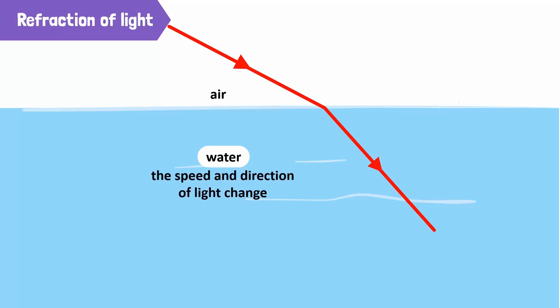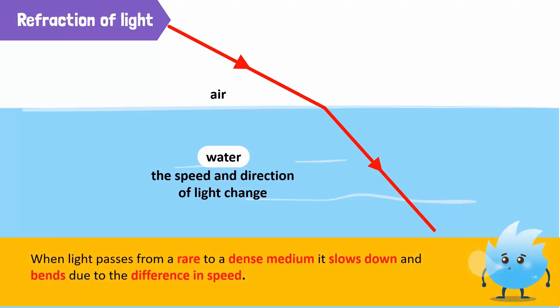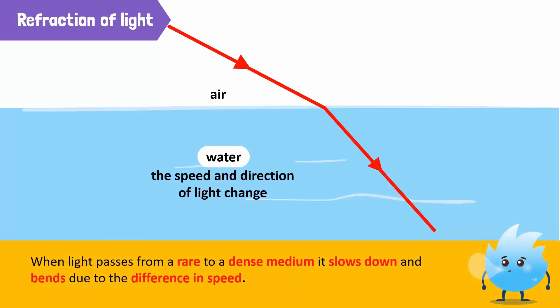Thus, during refraction, both the speed and the direction of a ray of light change. In other words, when light passes from a rare to a dense medium, it slows down and bends due to this difference in speed.